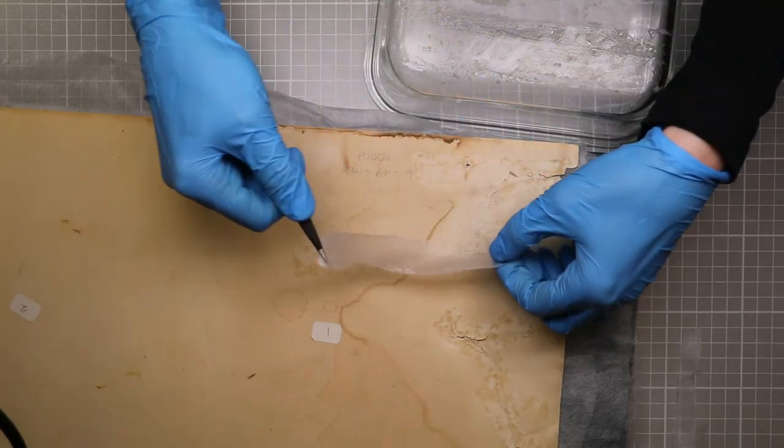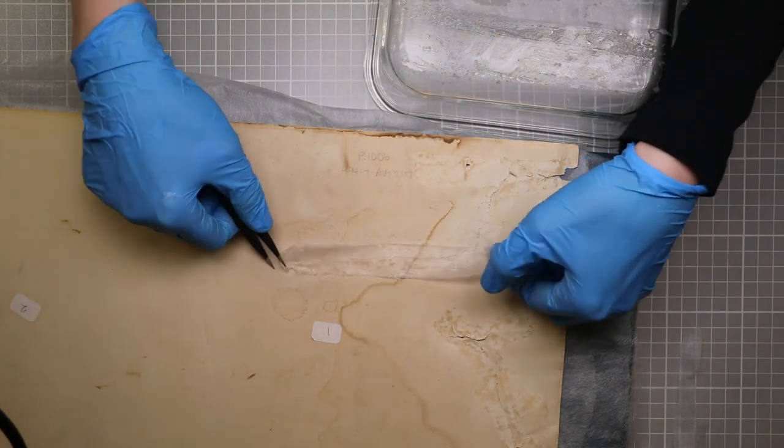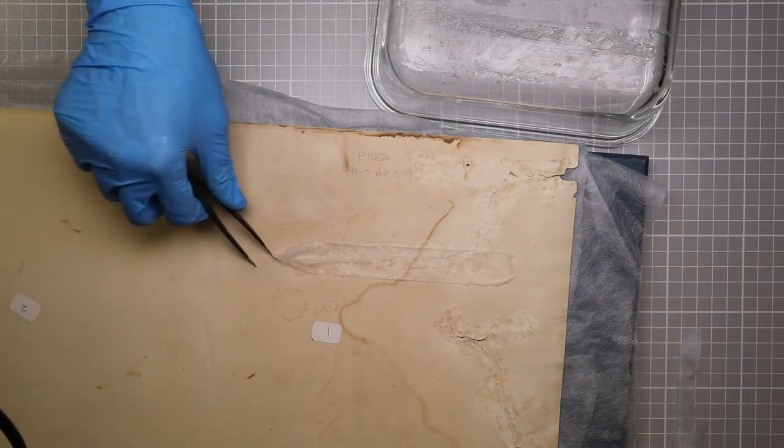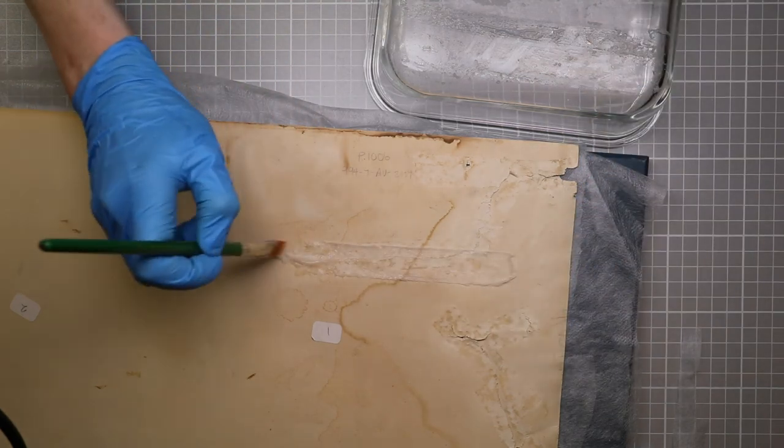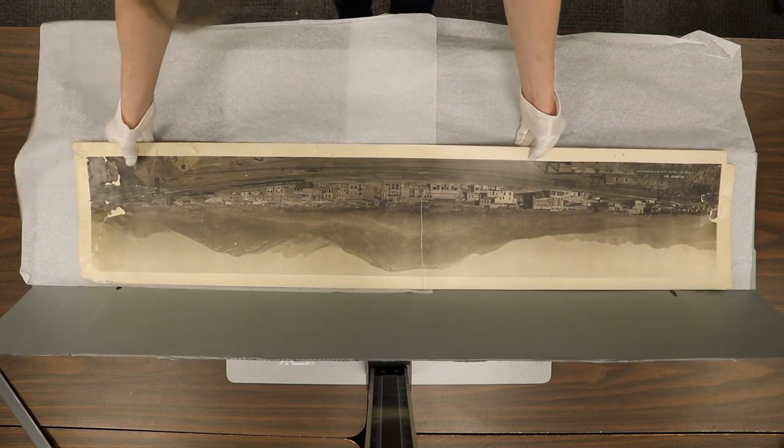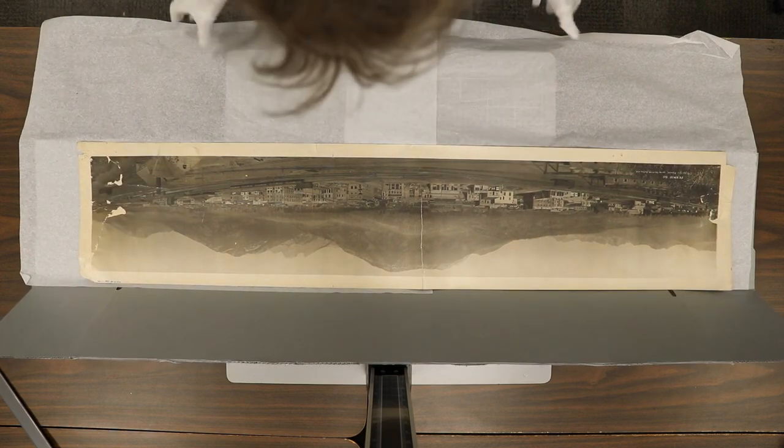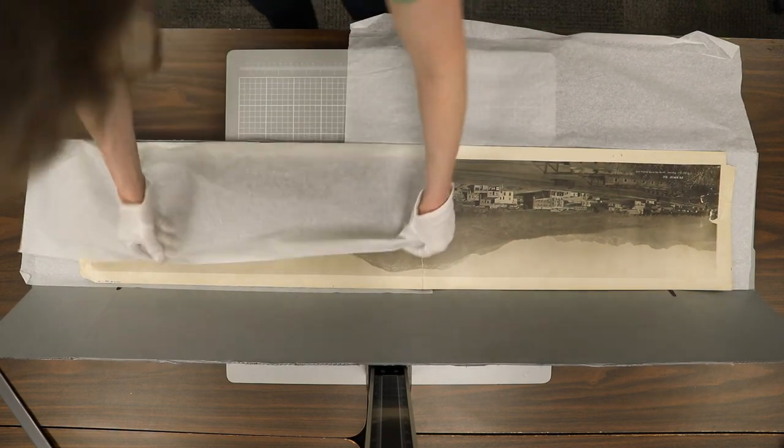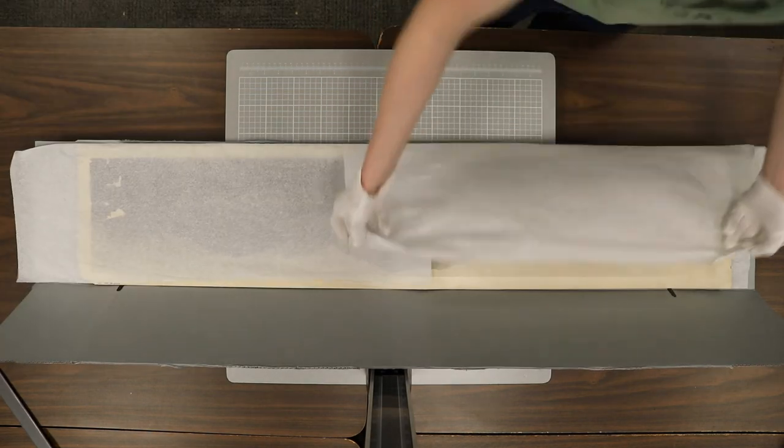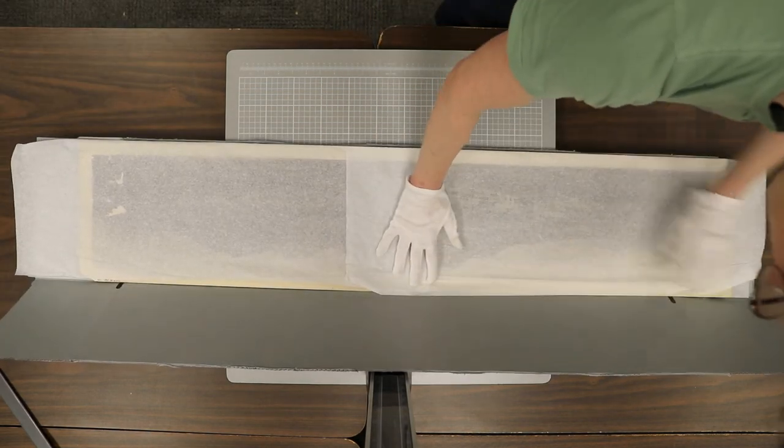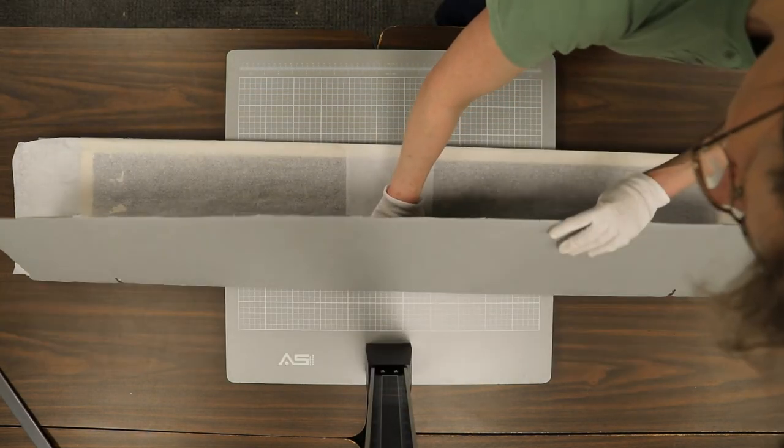And then we repair the tears using Japanese paper and starch paste, just like last time. Now that they've been carefully cleaned and repaired, these beautiful photographs will go to their forever home in our flat storage, where they can play with the other large-scale documents, kept safe and sound until the next time they are needed.